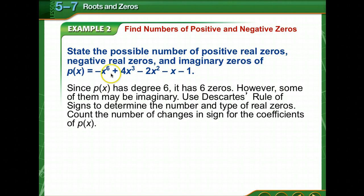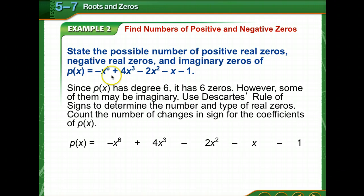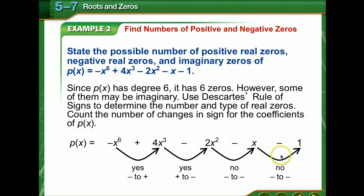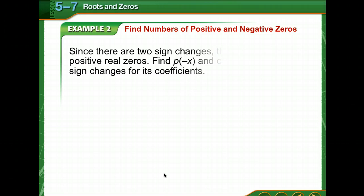The polynomial has a degree of six, so it has six zeros. However, some of them could be imaginary, so we need to count the number of sign changes. Looking at the original polynomial and keeping the signs with each term: from negative to positive — yes, it changes; positive to negative — yes, it changes; negative to negative — it's not changing; and it does not change here. So our polynomial changes signs twice. Since there are two sign changes, there are either two or zero positive real zeros.